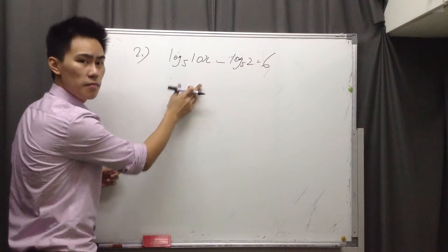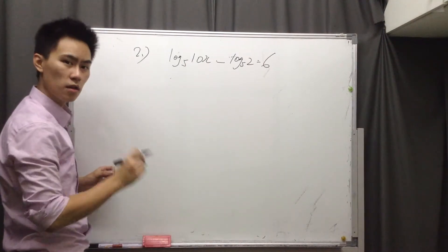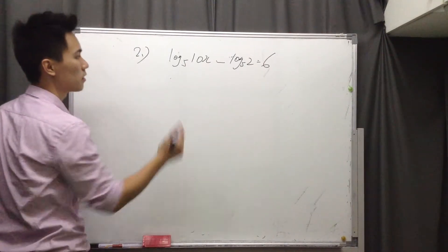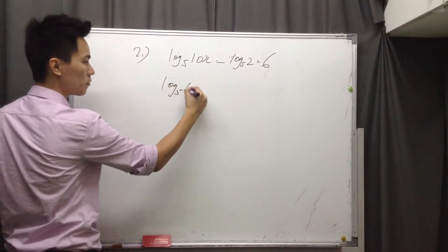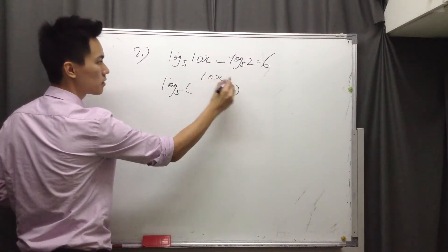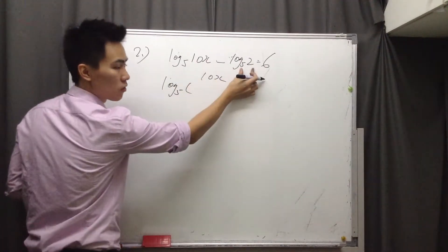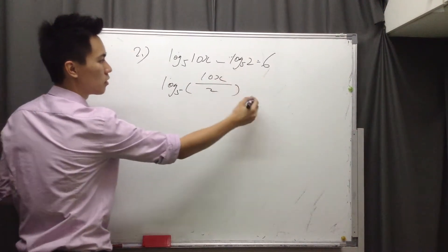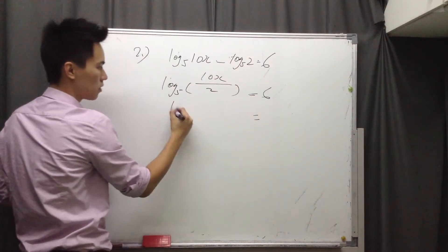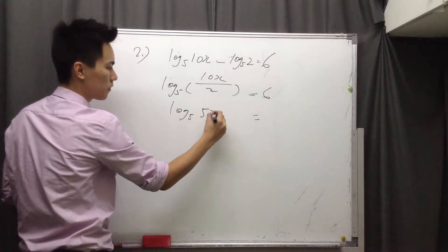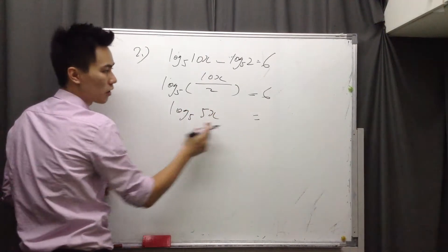So here, log A minus log B equals what? Log A over B, right? So log 5, bracket, 10x over 2, equals 6. So the left-hand side here, you will have log 5, 5x equals 6.